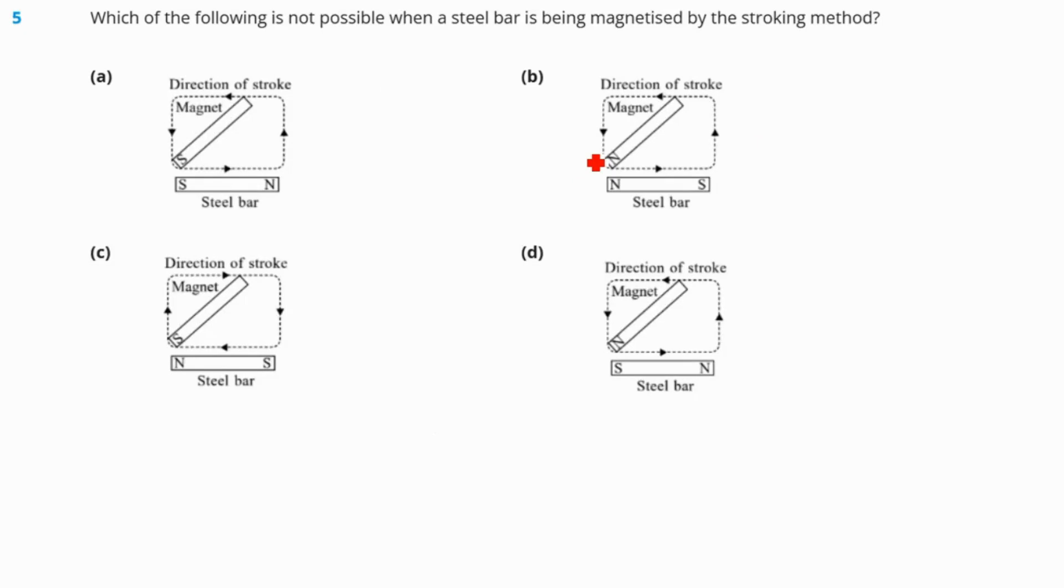Question number 5. Which of the following is not possible when a steel bar is being magnetized by the stroking method? Here, this is not possible. Let's see. So this is the south of the magnet. This is the stroking method. This will become south. This becomes north. This is correct. This is north. This becomes north and this becomes south. This is also correct. So this is north going up from here, it is going down again. So this is also possible. But this is not possible. See the arrow this side. This is not possible. This is the north of the bar magnet and this is a steel bar. This is not possible. So our right answer is option number D.